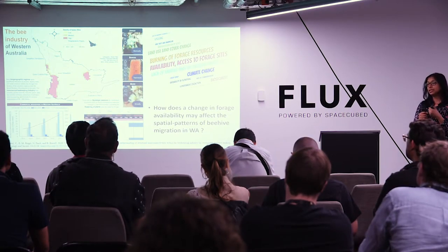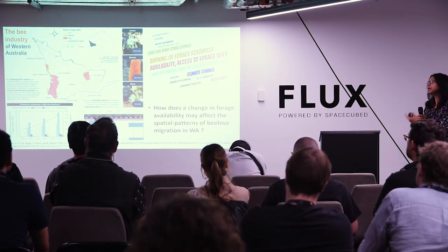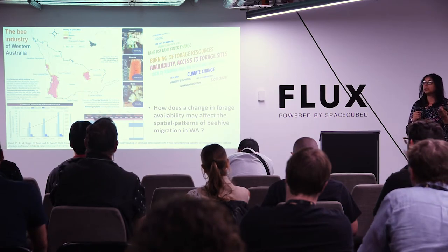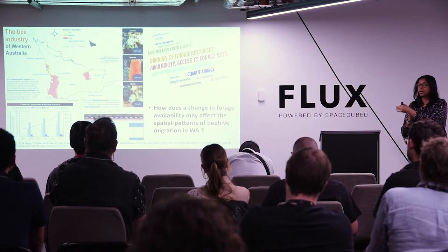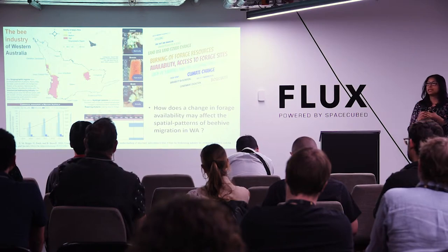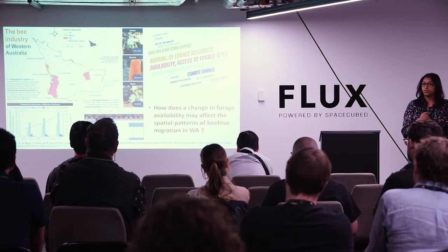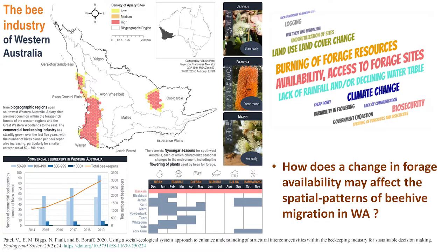We can see that these pressures are mainly affecting the forage resources themselves, and the effects get translated because everything is connected — their livelihood is totally dependent on the forage resource and its condition. So we investigate how changes in forage resources under any pressure are reflected in the spatial patterns of how beekeepers migrate around the landscape.